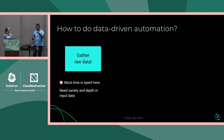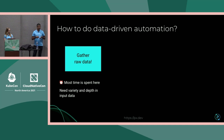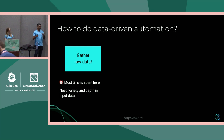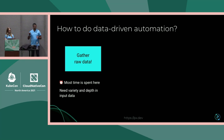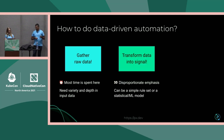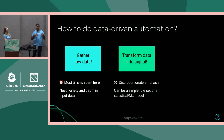For data-driven automation, the first step is that you gather the raw data. This might be something like getting the CPU utilization, capturing request information, or trying to understand specific parameters in your requests and how they impact latency. In reality, most of the time is actually spent here, even though a lot of coverage is given to the next two steps.